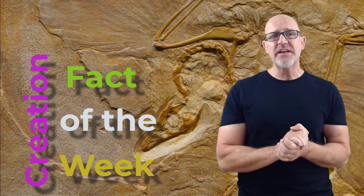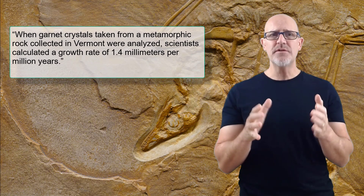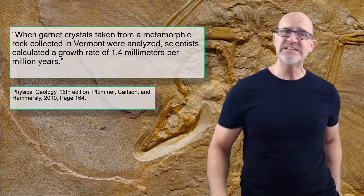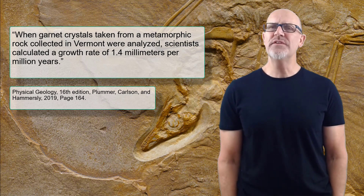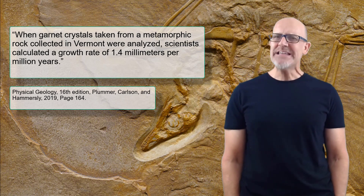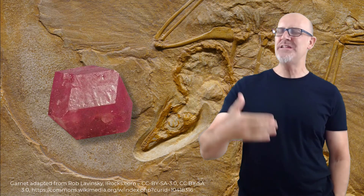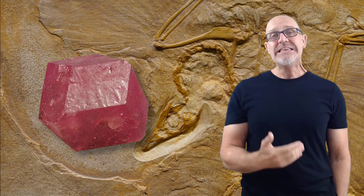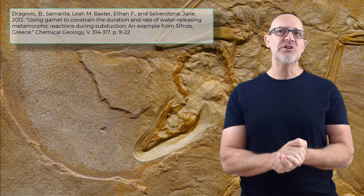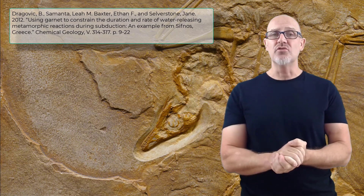It's time for our creation fact of the week. Did you know that the growth rate for some metamorphic minerals is thought to be very slow? Consider this statement from a well-known geology textbook published very recently: when garnet crystals from a metamorphic rock collected in Vermont were analyzed, scientists calculated a growth rate of 1.4 millimeters per million years. That's exceptionally slow — meaning a 15-millimeter diameter garnet would take about 11 million years to grow. Yet a paper published in 2012 suggests that garnets could actually have grown much, much faster.